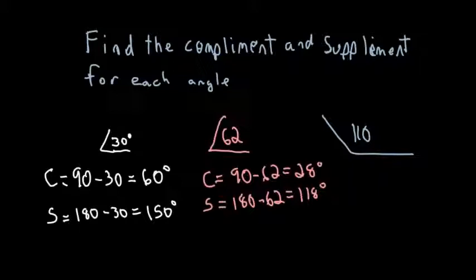And the last one is 110. So for our complement, we would have to do 90 minus 110. Well, that's going to give us a negative number. And you can't have a negative angle. So there is no complement. But there is a supplement. So for the supplement, we can do 180 minus 110. And that's going to give us 70 degrees for our supplement.